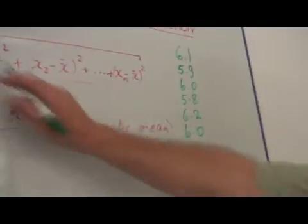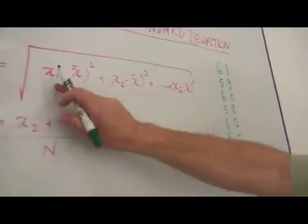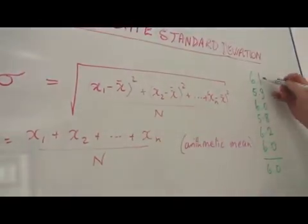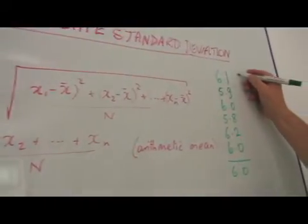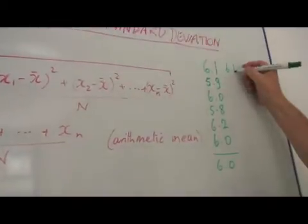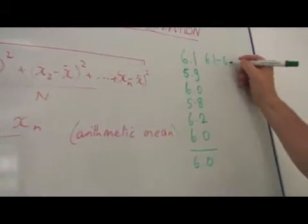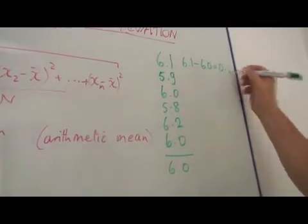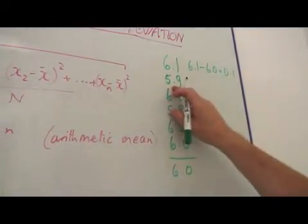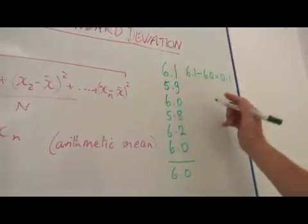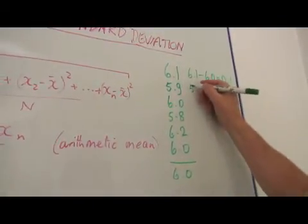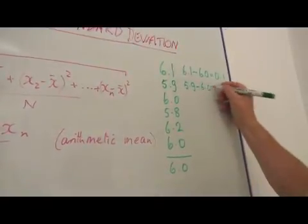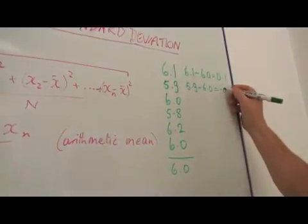Now in this formula I need to use my reading and take from it the arithmetic mean. So here it will be 6.1 minus 6.0, which is 0.1. Now here 5.9 is lower, so it's actually 5.9 minus 6.0, which is minus 0.1.